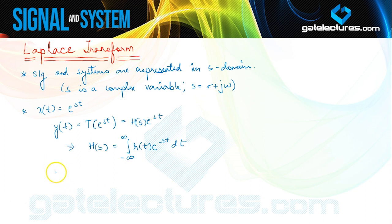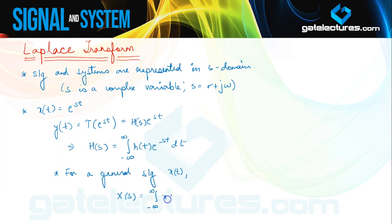For a general signal X(t), its Laplace transform X(S) is defined as the integration from minus infinity to infinity of X(t) times e to the power minus ST dT. That is, to find the Laplace transform of any general signal X(t), we integrate the signal multiplied by e to the power minus ST over the complete range from minus infinity to infinity. This is how we define the Laplace transform of a general signal.